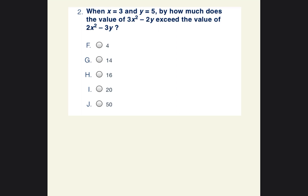When x equals 3 and y equals 5, by how much does the value of 3x squared minus 2y exceed the value of 2x squared minus 3y? The two equations given are 3x squared minus 2y and 2x squared minus 3y. It says the first one exceeds the second one, so this one is probably going to be more. Let's plug in x equals 3 and y equals 5.